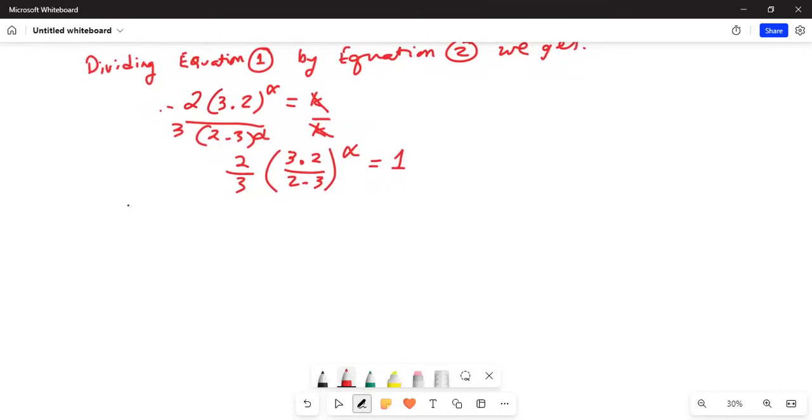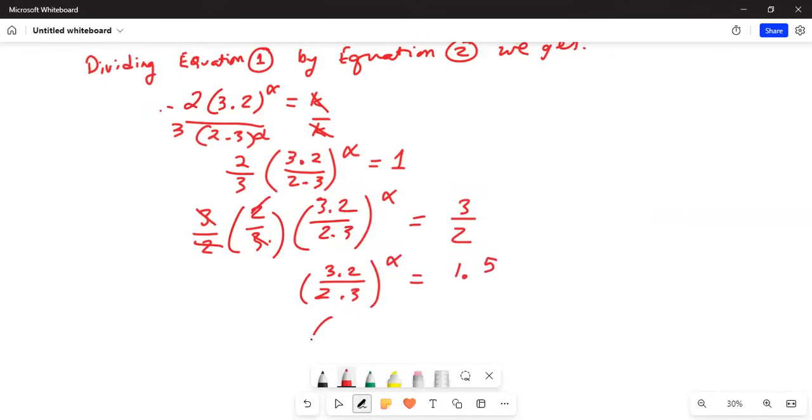Multiply both sides by 3 divided by 2 times 2.3 divided by 3.2 exponent alpha. Now this 2 and this 2 will cancel and this 3 will cancel. So on the left hand side we have 3.2 divided by 2.3 alpha equals 3 divided by 2 which is 1.5.